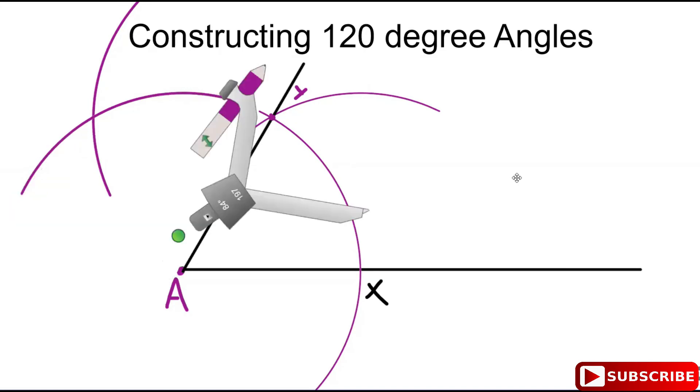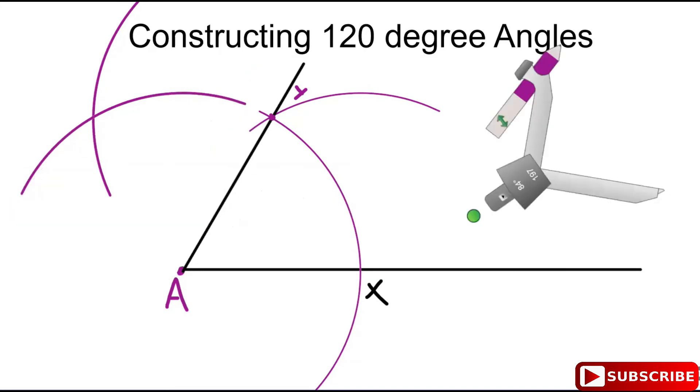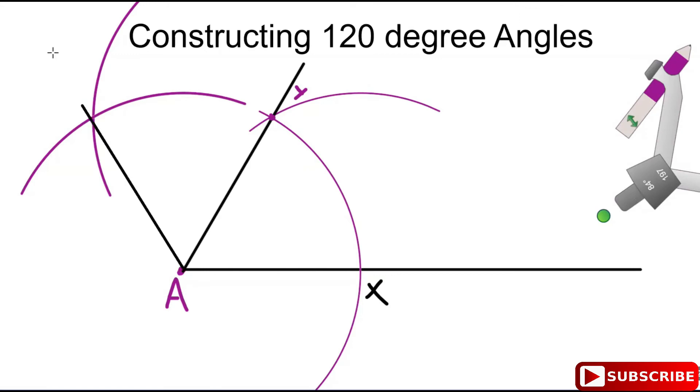Put away your compass and construct a line from A passing through the intersection of the two swings. Label that point as P, since we already used A, X, and Y.